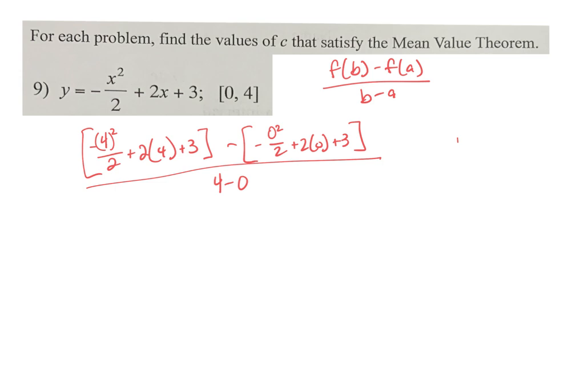All over 4 minus 0. So for the first one, we're going to get negative 8, plus 8. So we get 3 minus 3 over 4, which gives us 0. That's our mean value. So we are looking for... So mean value is not always going to be 0. It could be 2, it could be 3, it could be 1/2 for all you know. Whatever this is, you're going to set your first derivative equal to that. So we're going to take first derivative, which ends up being negative x plus 2, and we're going to set that equal to 0, which gives us x equals 2, which is in our interval, which satisfies the mean value theorem.